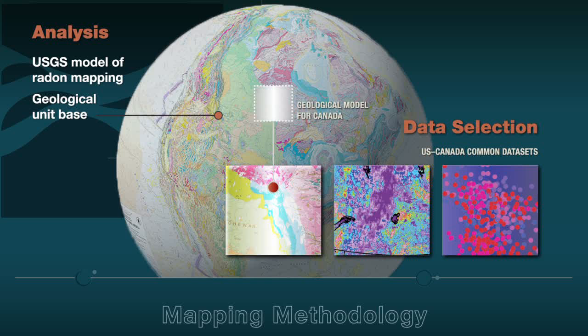The core methodology of the Canadian map was largely based on the U.S. Geological Survey approach to the development of their map. The framework is the database of the Geologic Map of North America, which covers 29,000 individual map polygons, describing the distribution of 700 map units.